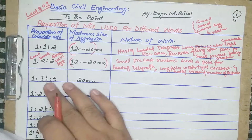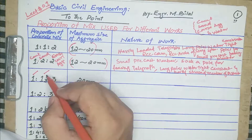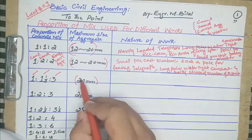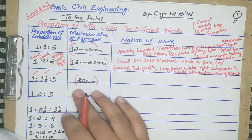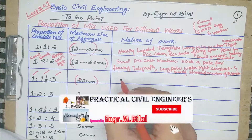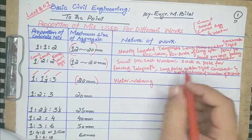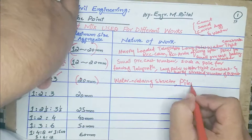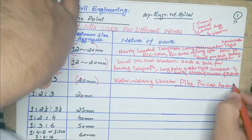The third proportion of concrete mix is 1:1.5:3 — one cement, one and a half sand, and three coarse aggregate. The maximum allowable size of aggregate is 20 mm. This type of concrete mix proportion will be used in water-retaining structures, piles, precast products, etc.